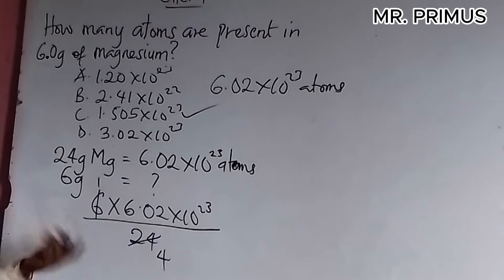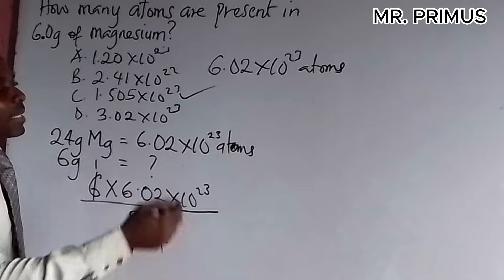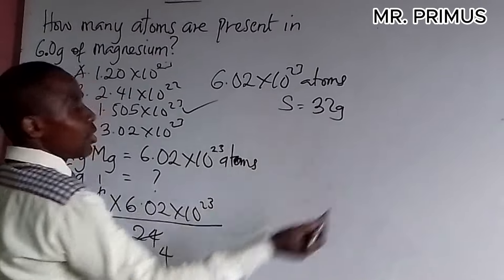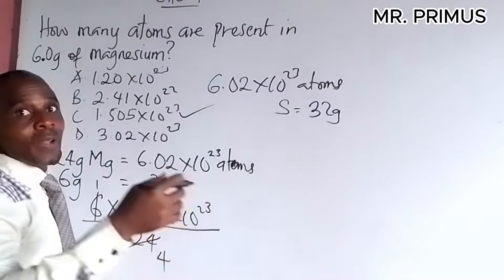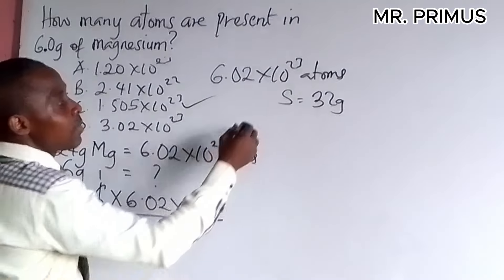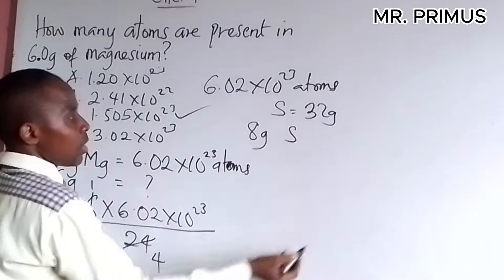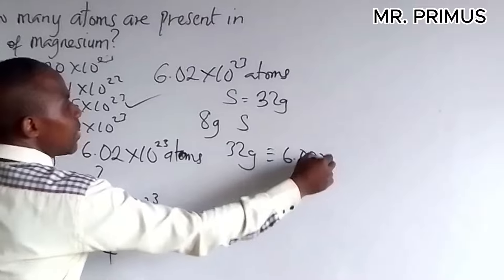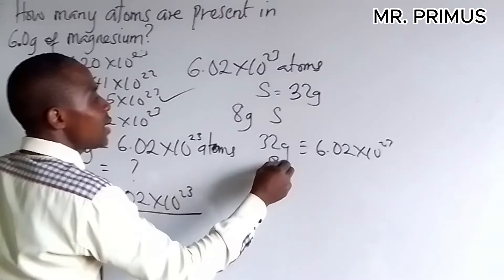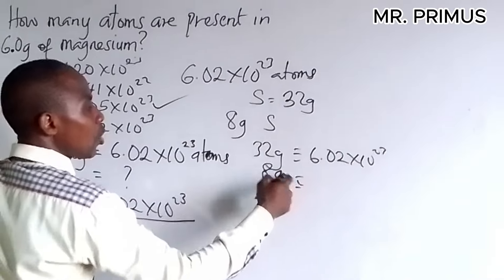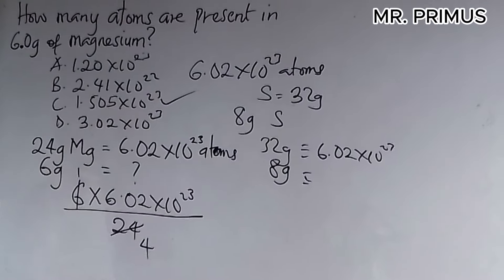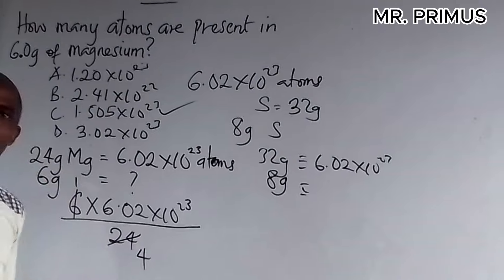These ones are not the answers. Now, look at it. It means that if you are given an element like sulfur, sulfur we know is 32 grams. And you may be asked to find the number of atoms containing possibly 8 grams of sulfur. You just say 32 grams of sulfur contains 6.02 times 10 raised to power 23. Then, 8 grams will contain 8 times this divided by this. You get the answer. So, that is how to solve a question like this.